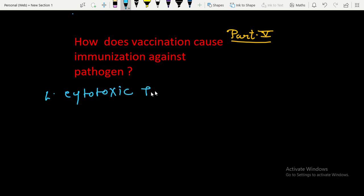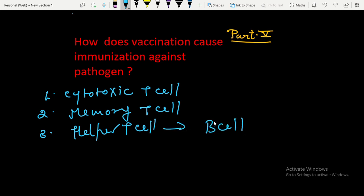Cytotoxic T-cell, memory T-cell and helper T-cell. And this helper T-cell encouraged the B-cell, motivated the B-cell to make plasma cells and memory B-cells.